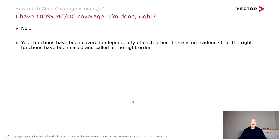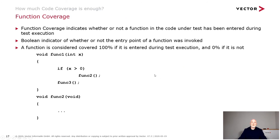So you might think that with 100% MCDC coverage you're done — but no. Your functions have been covered, so we've done the proofreading of the paragraphs, but there's no evidence that the right functions were called in the right order for a particular functional test. So we can move on to other categories of coverage.